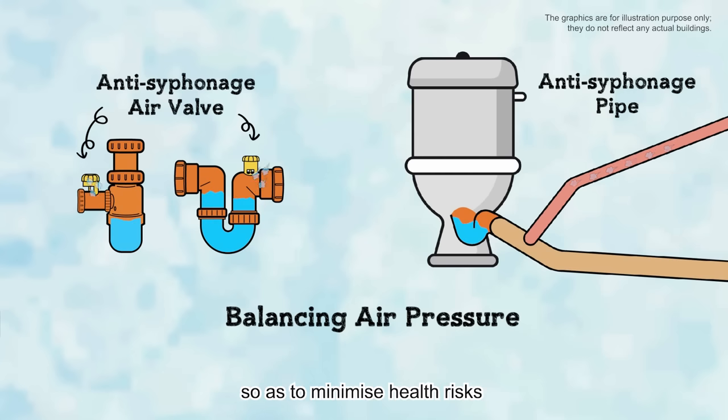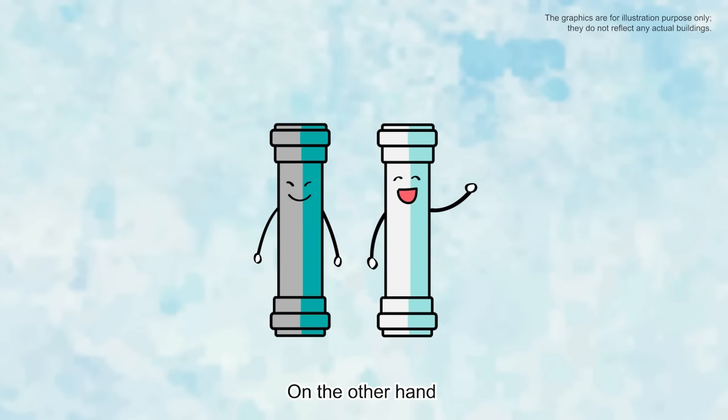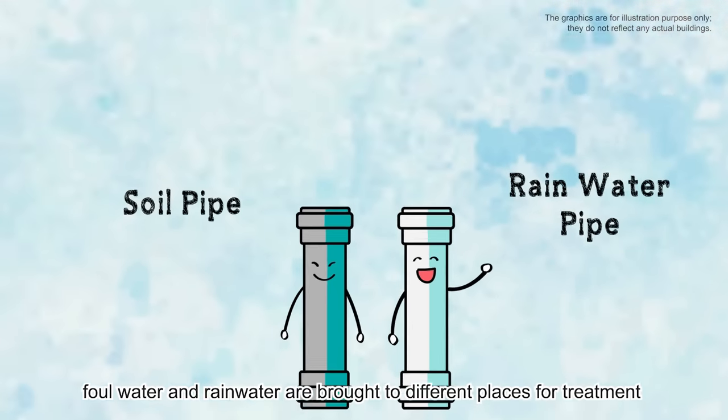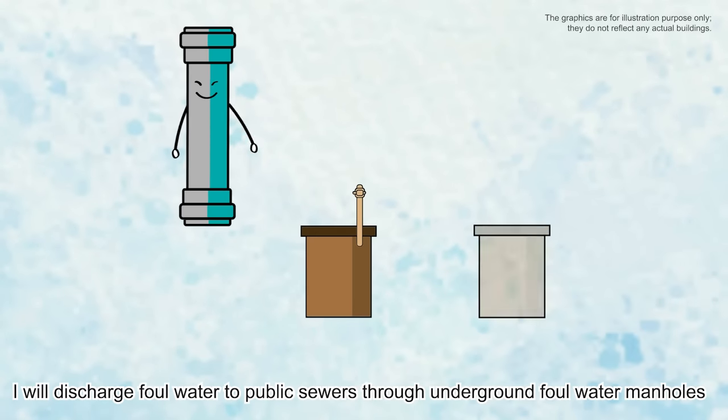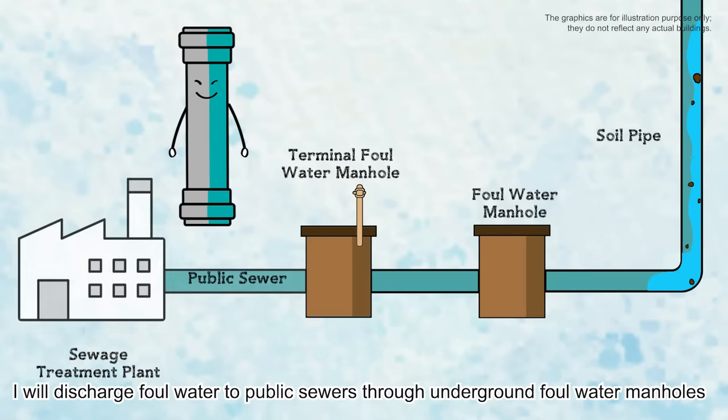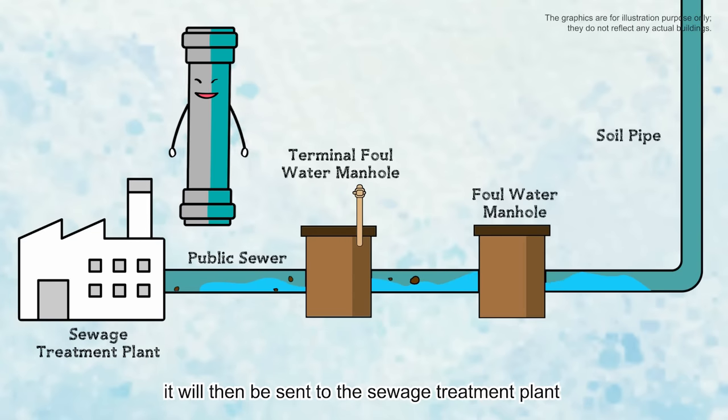On the other hand, foul water and rainwater are brought to different places for treatment. I will discharge foul water to public sewers through underground foul water manholes. It will then be sent to the sewage treatment plant.